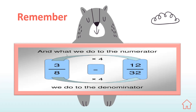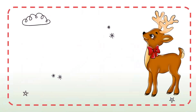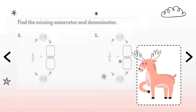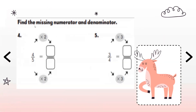Let's remember again: what we do to the numerator, we do to the denominator. Let's start our practice booklet, page 44. Find the missing numerator and denominator given the factor. We have 4 fifths, and we're asked to multiply the numerator by 2. So 4 times 2 will give me 8. I'll do the same and multiply the 5, which is the denominator, by 2 as well, giving me 10.